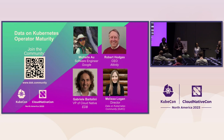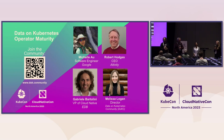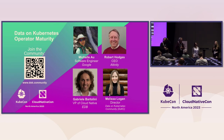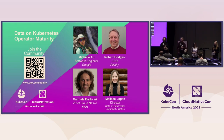I want to start with some context. The operator framework has different levels of what operators enable — level one is basic install and it goes up to level five. We ran a survey a year ago in the Data on Kubernetes community and it showed that people want their operators to function at a very high level: levels three, four, and five — that's full lifecycle management, deep insights, and autopilot.